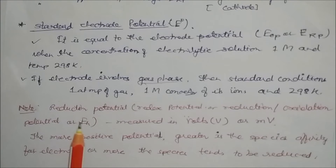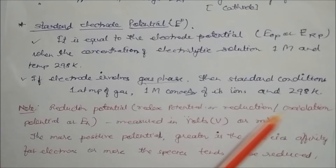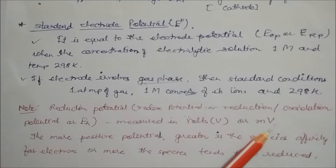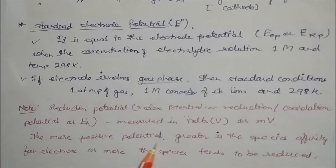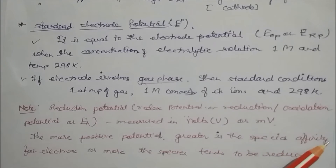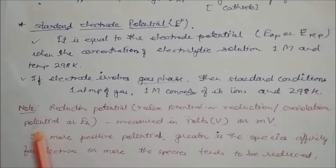An important point: reduction potential, also called redox potential or oxidation-reduction potential (E), is measured in volts or millivolts. If the volt value is more positive, the greater is the species' affinity for electrons, and more the species tends to be reduced. Please note this as an important point.